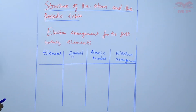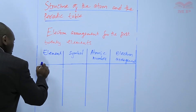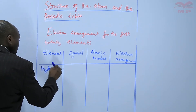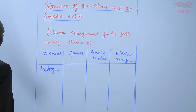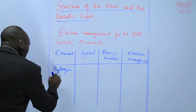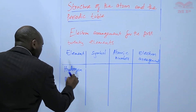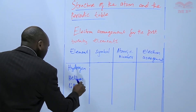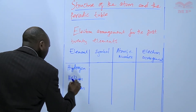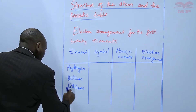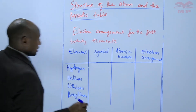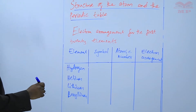So in our table, we'll start with element hydrogen, which we said is the smallest atom, followed by helium, then lithium, beryllium. The list continues.